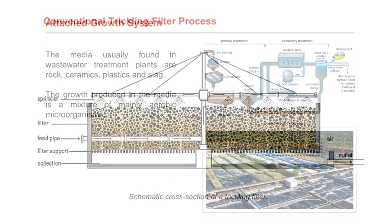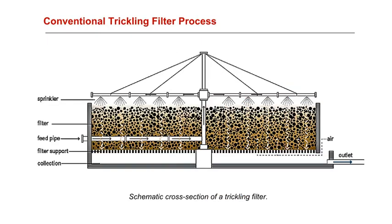The traditional form of wastewater treatment system is a trickling filter. It consists of a solid bed of rocks, dirt, slag, polyurethane foam, sphagnum peat moss, ceramic, or plastic media over which sewage or other contaminants runs down and allows a layer of biofilm to expand and cover the bed of the media.